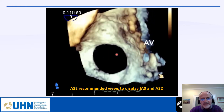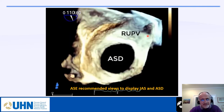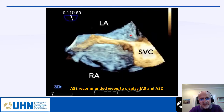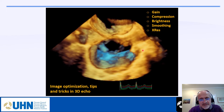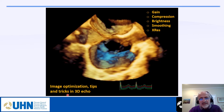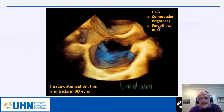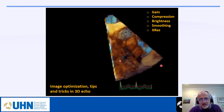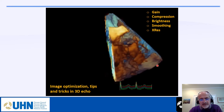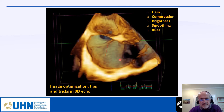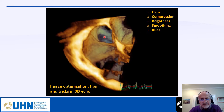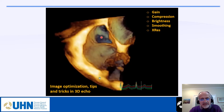This is the large ASD, and when we rotate to the left side view, the right upper pulmonary vein should move to 1 o'clock. This is a full volume acquisition of the interatrial septum with SVC and IVC. To optimize images, we adjust gain, compression, brightness, smoothing, and X-ray settings — as discussed this morning — and we can crop from different aspects to visualize the right atrium, IVC, and coronary sinus.